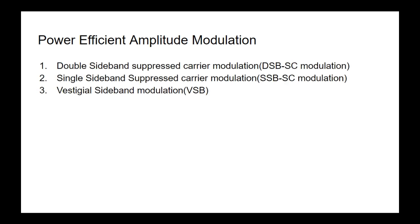Power-efficient amplitude modulation is of three types: Double Sideband Suppressed Carrier (DSB-SC) modulation, Single Sideband Suppressed Carrier (SSB-SC) modulation, and Vestigial Sideband (VSB) modulation.